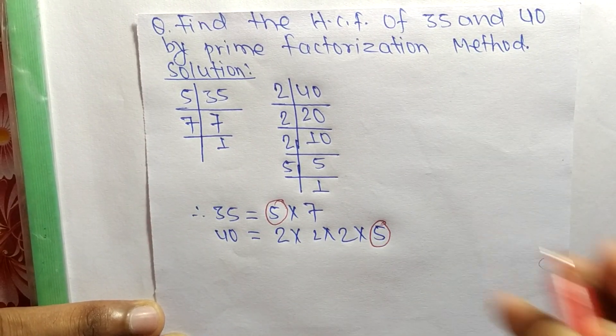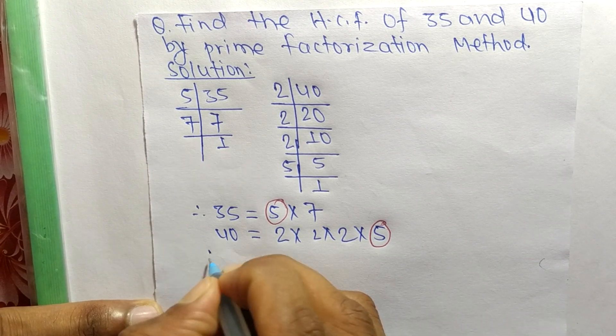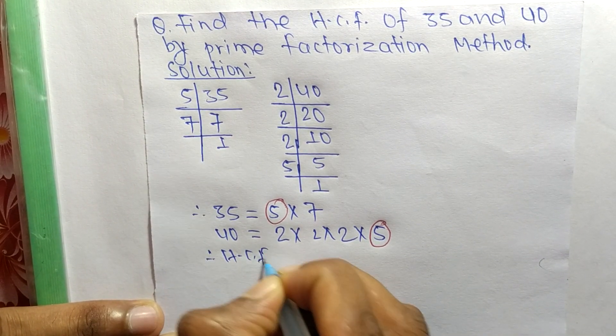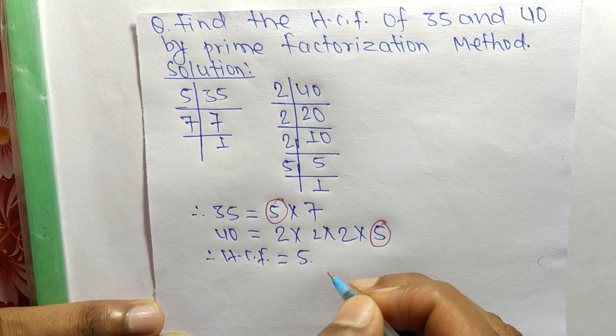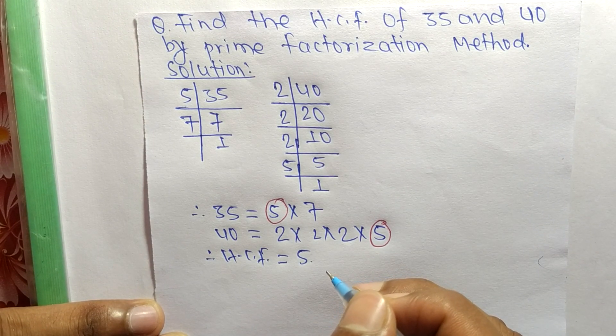The common factor is 5, so HCF is equal to 5. So this much for today and thanks for watching.